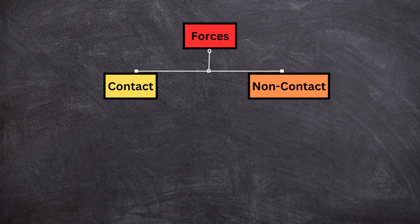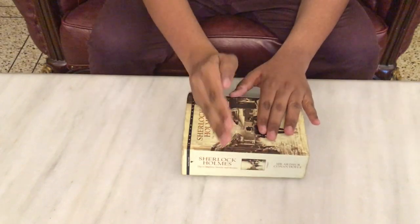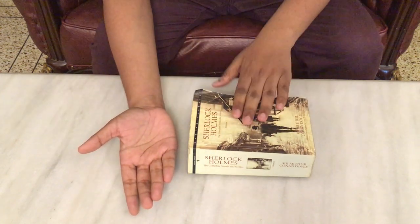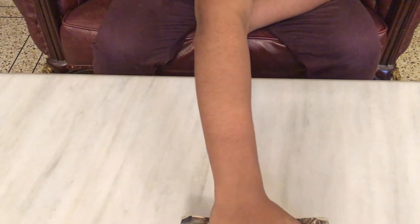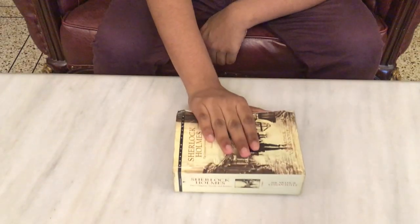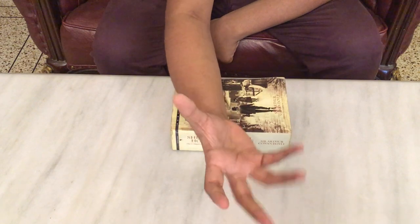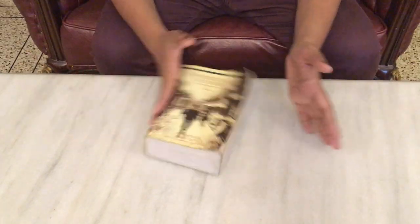There are two main types of forces: contact forces and non-contact forces. A contact force is something that requires touch for the force to be applied. For example, my hand will apply a force to this book — see, it moved over there. That means my hand pushed it over there, and I can bring it back to me again using pull.